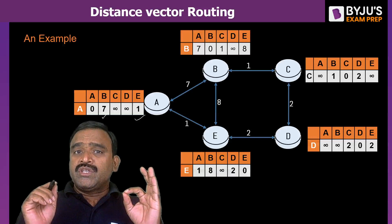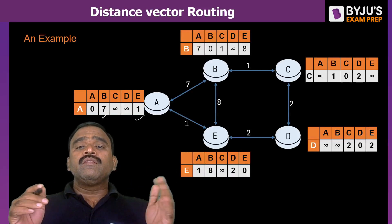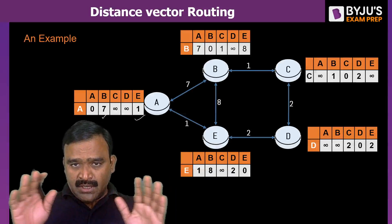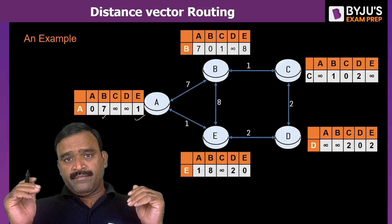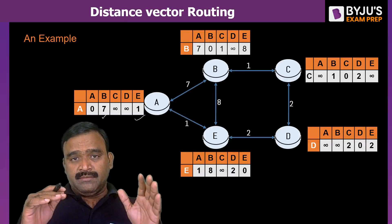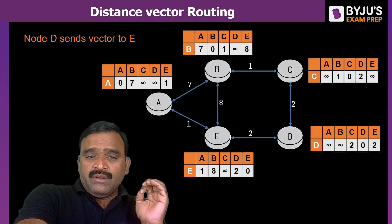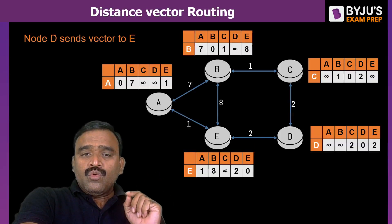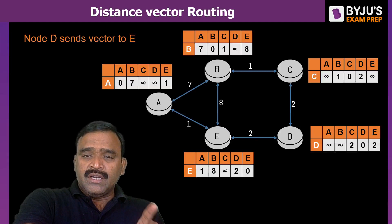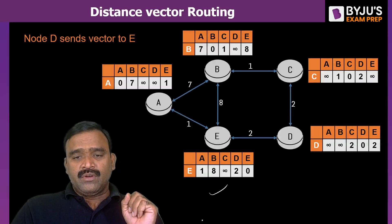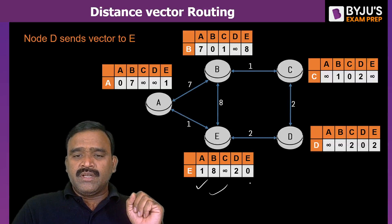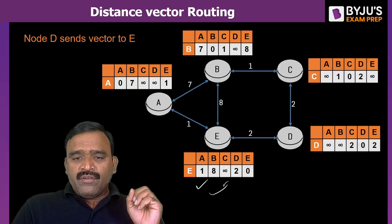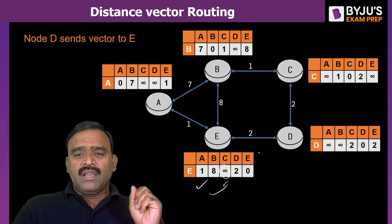This is a very important point about how distance vector routing works initially. If a router is not a neighbor in the domain, its distance is set to infinity. This domain of routers — A, B, C, D, E — may cover an area within a state or a country depending on the domain size. Now, if A wanted to update its routing table, it gets information from neighbors B and E. If E wanted to update its routing table, E to B is 8, E to A is 1, E to D is 2, but E to C is infinity because C is not a neighbor. To fill that entry, we need to get vectors from all neighbors.